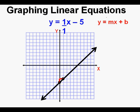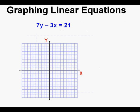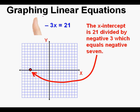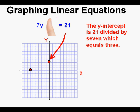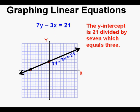Let's review. If you have an equation in standard form, you can graph it with two points. Cover the y-term then solve for x to get the x-intercept: 21 divided by negative 3 equals negative 7. Mark the x-intercept on the x-axis. Next, cover the x-term and solve for y to get the y-intercept: 21 divided by 7 equals 3. Mark the y-axis at y equals 3. All that remains is to draw the line through the two points.